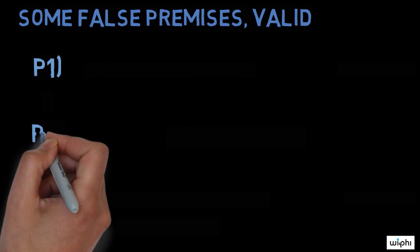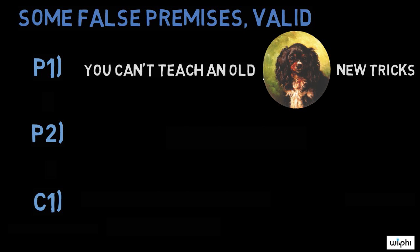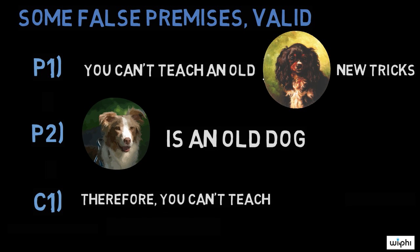We are now going to look at an argument with at least one false premise that is valid. Premise one, you can't teach an old dog new tricks. Premise two, Split is an old dog. Conclusion, therefore you can't teach Split new tricks.